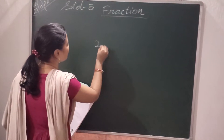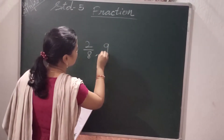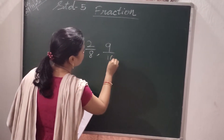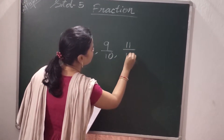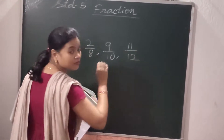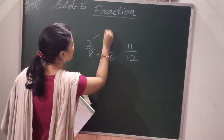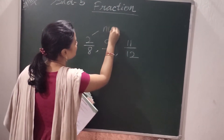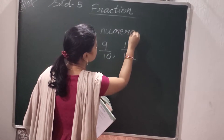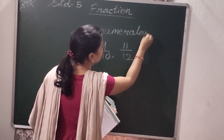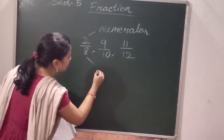Here 2 by 8, 9 by 10, 11 by 12 — these are called fractions. The number 2 is called the numerator and 8 is called the denominator.